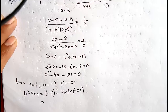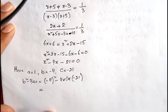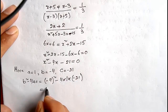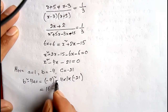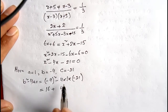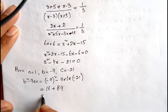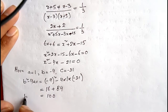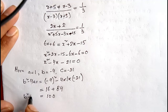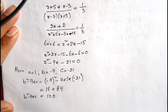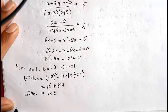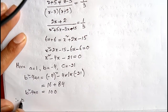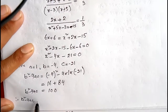When we calculate b squared minus 4ac: 16 minus (minus 84) = 16 plus 84 = 100. So the discriminant is 100, which is greater than zero. It means this quadratic equation has two real roots.